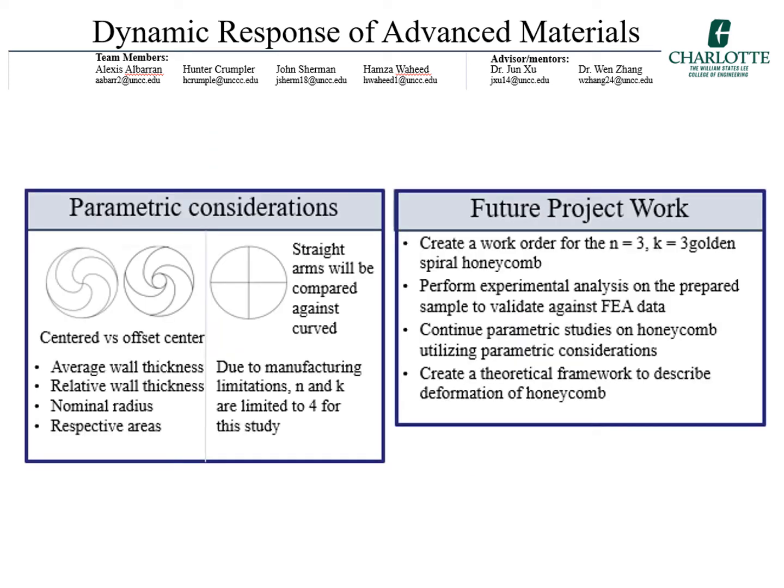With the golden spiral, additional geometric considerations are included in the parametric studies. They will also be compared against straight wall structures to determine the effect of the curvature on the rigidity. Additionally, thickness effects in nominal cell size will be considered.